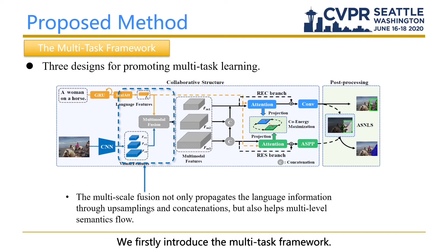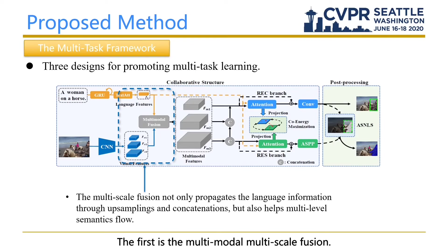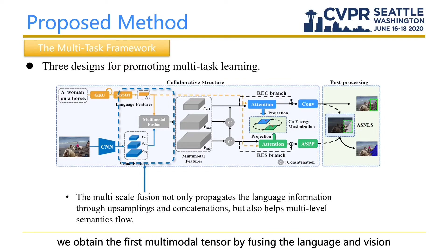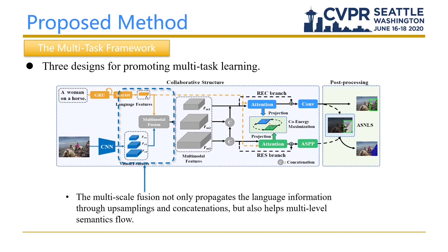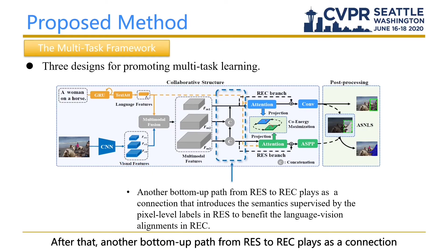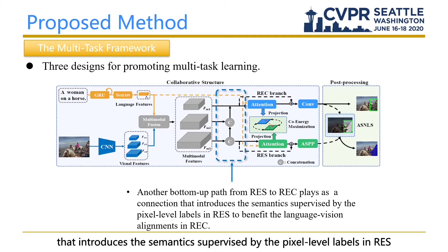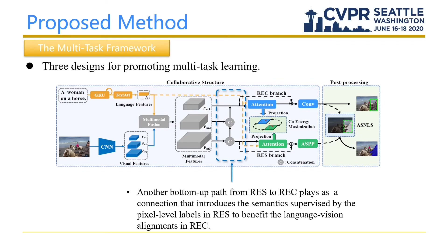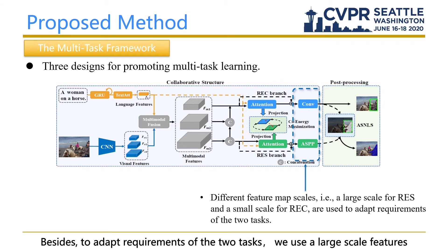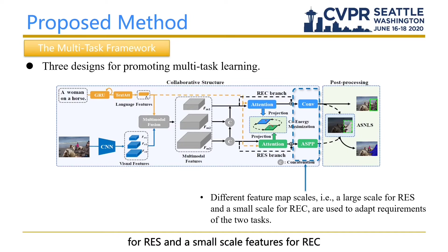We first introduce the multi-task framework, which has three designs for promoting multi-task learning. The first is multimodal multi-scale fusion: we obtain the multimodal tensor by fusing language and vision features, then apply a concatenation-convolution step for multi-scale fusion. After that, a bottom-up path from RIS to REC introduces semantics supervised by pixel-level labels in RIS to benefit language-vision alignments in REC. To adapt to the requirements of the two tasks, we use large-scale features for RIS and small-scale features for REC.